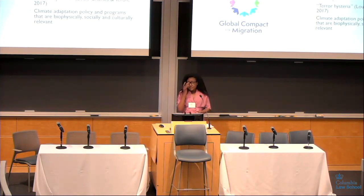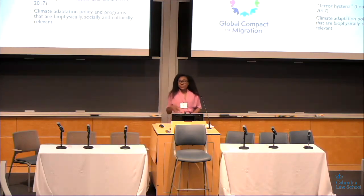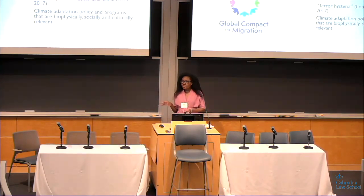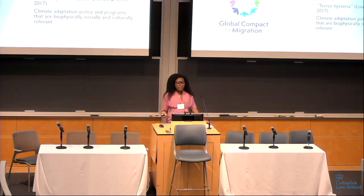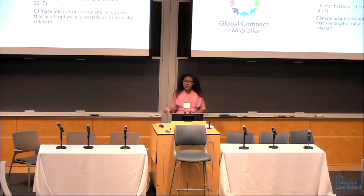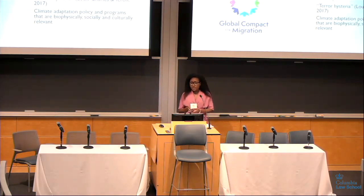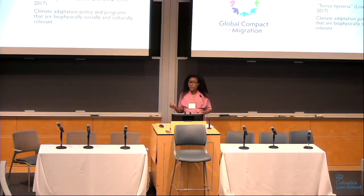Why is this important? Currently there is no legal recognition for climate refugees, which is important for immigration policy. There are increasing immigration policies driven by terror hysteria that target certain groups based on religion or appearance, and we're trying to avoid that if we're going to have climate refugees. It's also important for climate adaptation policy — we want policies that are culturally relevant, biophysically relevant, and socially relevant. It's crucial to look at this from different local and regional contexts, because depending on where people are, they'll have different responses to climate change risk.